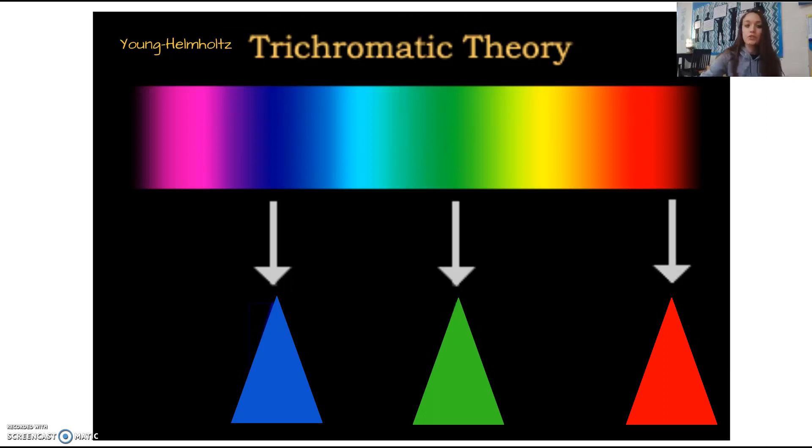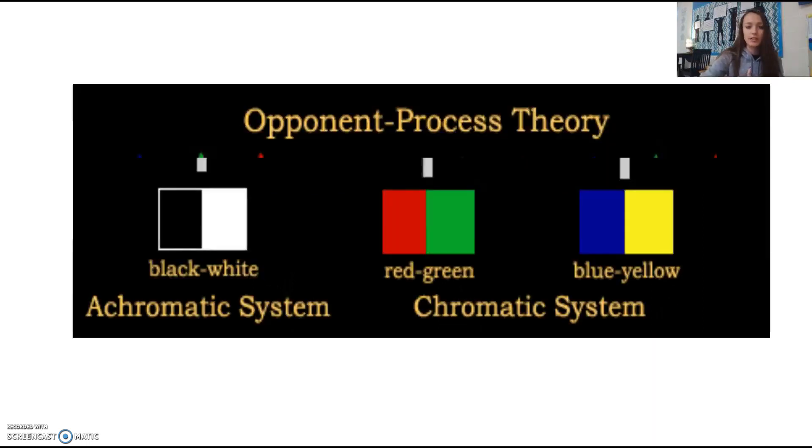So if we go to the next theory, this theory is called the opponent-process theory. The opponent-process theory states that you have three photoreceptors. One is picking up blue and yellow together, two opposing colors. The other is picking up red and green, two opposing colors. And then your third is detecting the blacks and the whites.